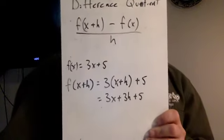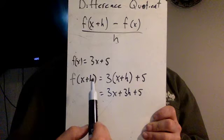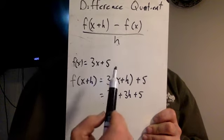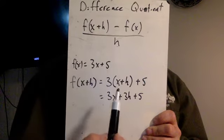Now you do the math, and you distribute the 3, and you get 3x plus 3h plus 5. So that is f of x plus h for this example.